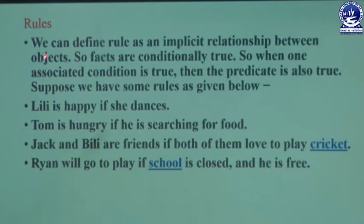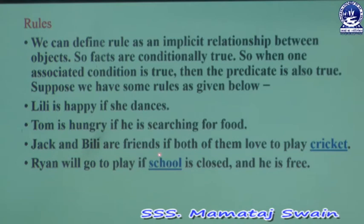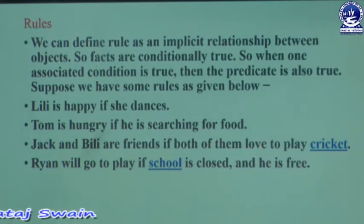Rules can be defined as an implicit relationship between objects. Facts are conditionally true, meaning when one associated condition is true, the predicate is also true. Some examples of rules are: Lily is happy if she dances; Tom is hungry if he is searching for food; Jack and Billy are friends if both of them love to play cricket; Rayyan will go to play if school is closed and he is free. Now look at how we represent a rule using Prolog syntax.